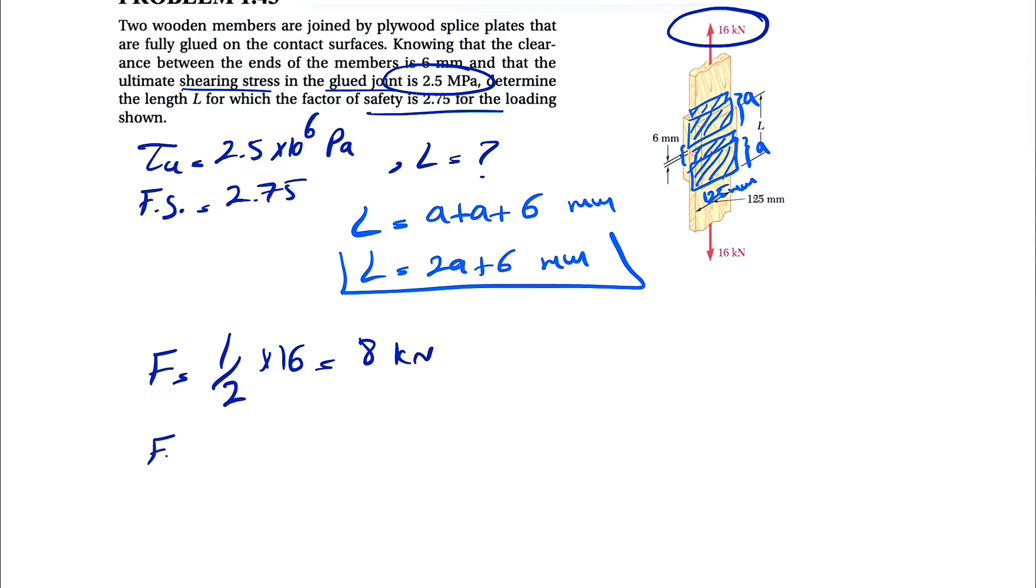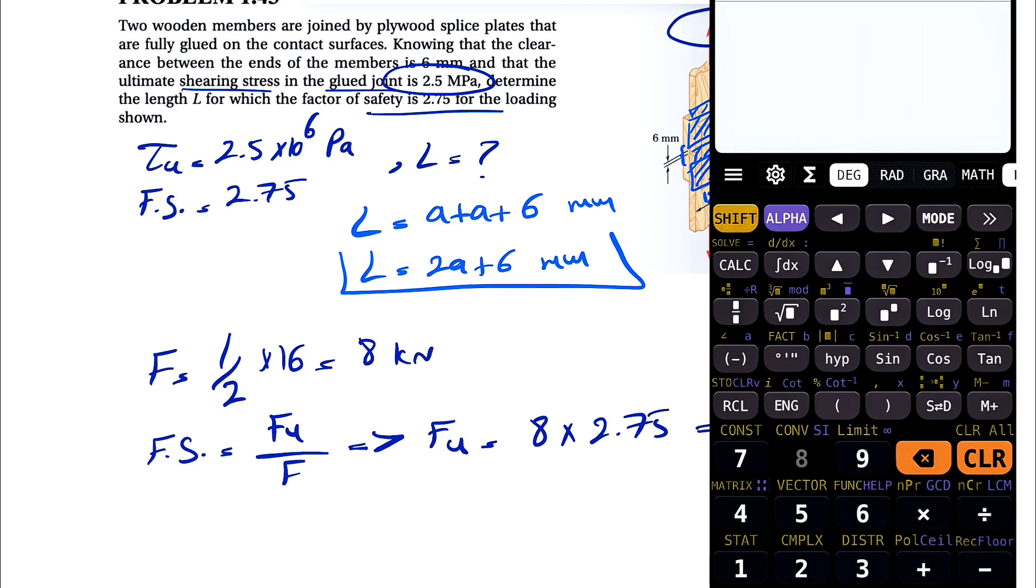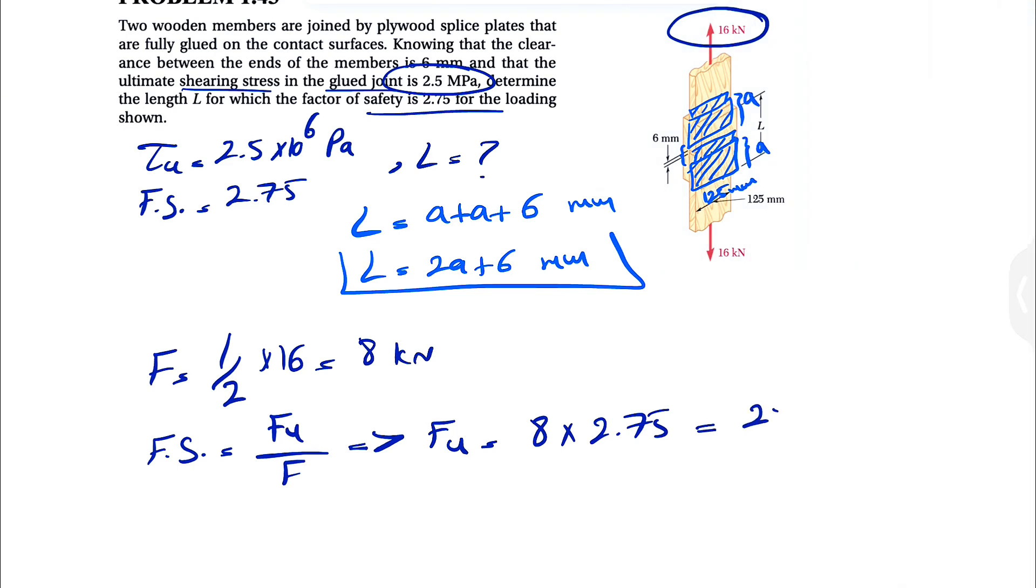What we can do here is that we have the factor of safety, which is the ultimate force over the force that we have, so we can find the ultimate force, which would be F times the factor of safety, 2.75, and that's going to give us 22 kilonewtons.